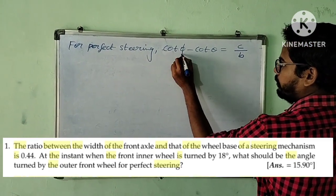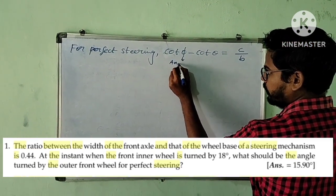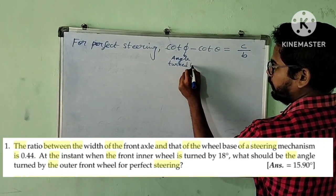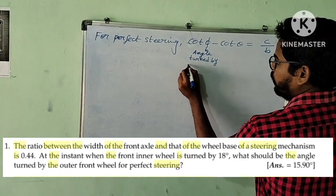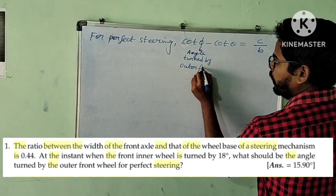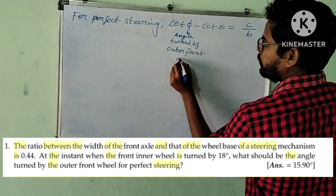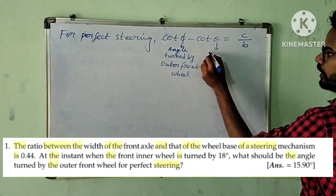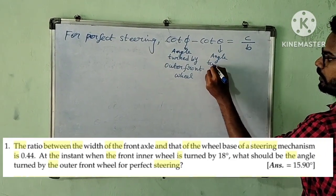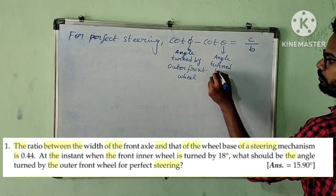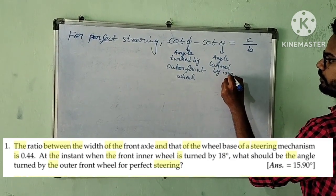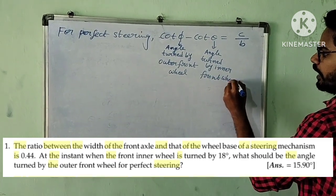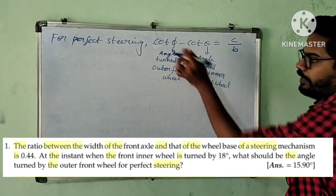Here, φ means the angle turned by the outer front wheel, and θ means the angle turned by the inner front wheel. So, angle turned by inner front wheel is θ, and angle turned by outer front wheel is φ.